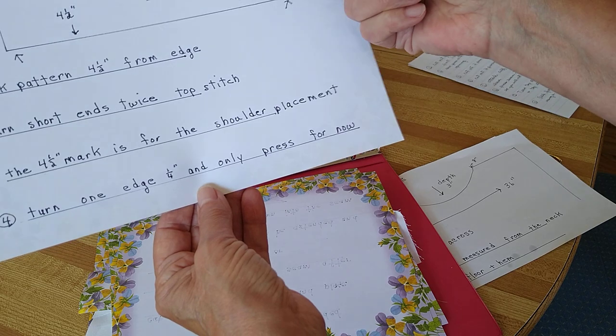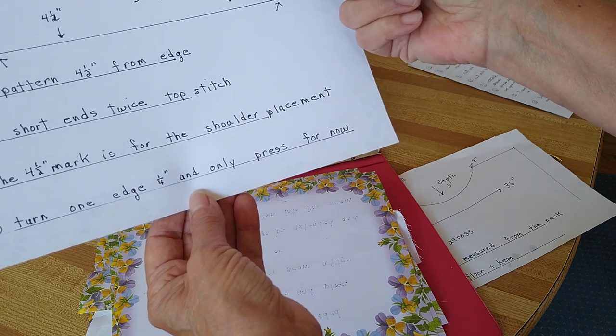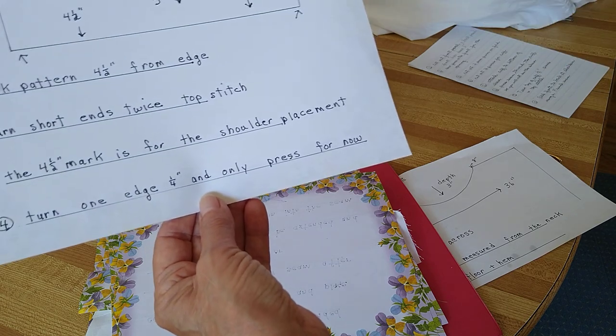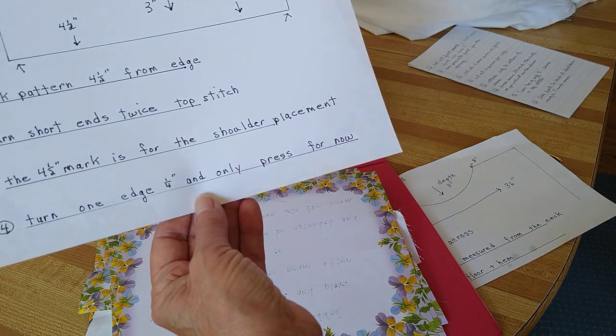When you're done with it you're going to turn these ends and top stitch it, and this one of these two, whichever one you want, you're going to turn it a quarter of an inch and press it. It's going to get attached to the neckline by a topstitch.